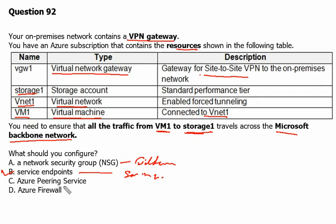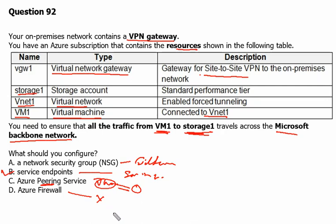Option C is Azure peering service, which is used to connect two or more VNets — that is VNet-to-VNet — which is not useful in this case. Azure Firewall is also not the correct answer here, because Azure Firewall is a managed cloud-based network security service that protects Azure virtual network resources. Therefore, Option B — service endpoint — is the correct answer for securely and directly connecting an Azure resource to an Azure service, specifically VM1 to Storage 1.